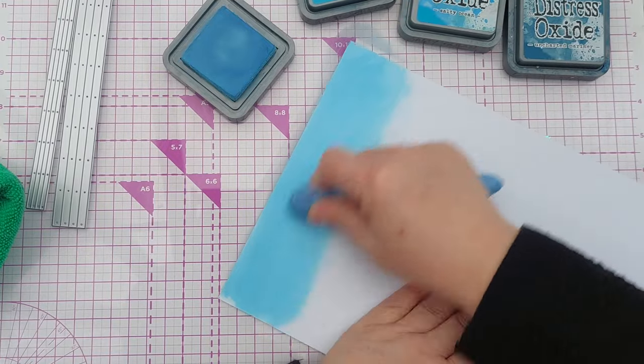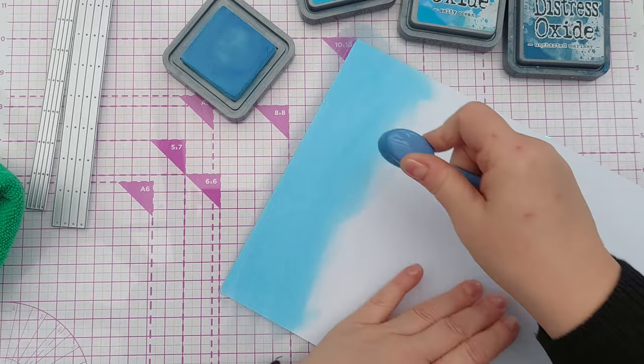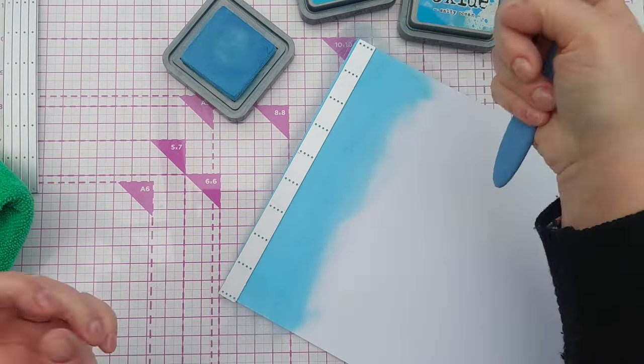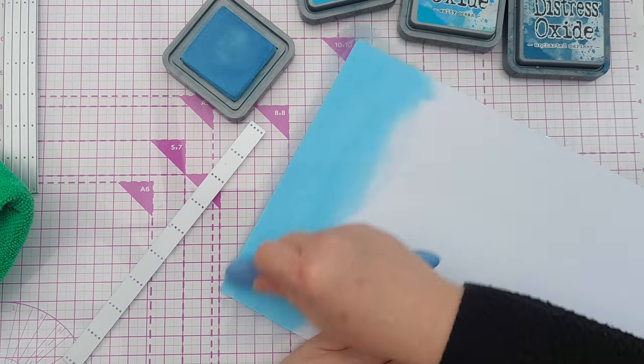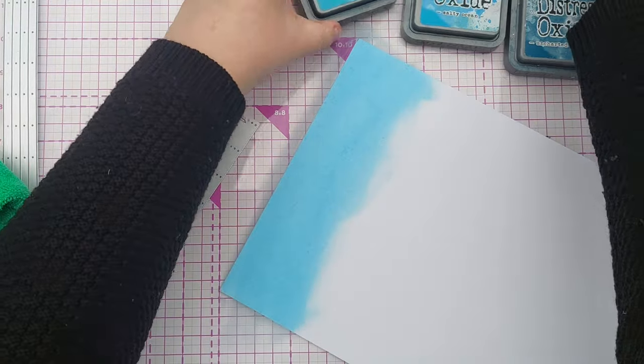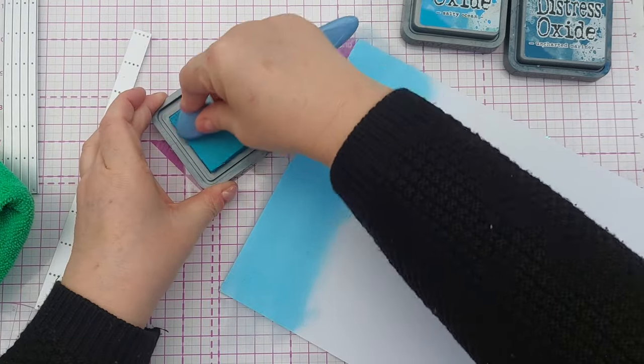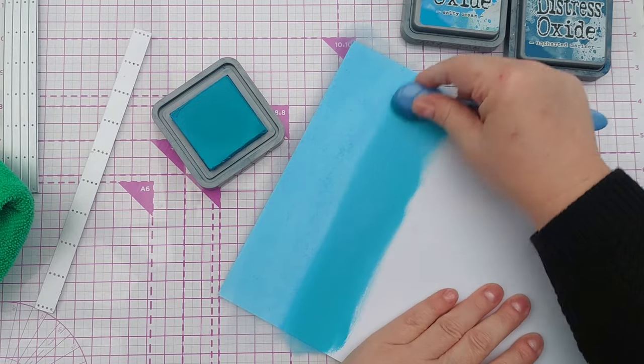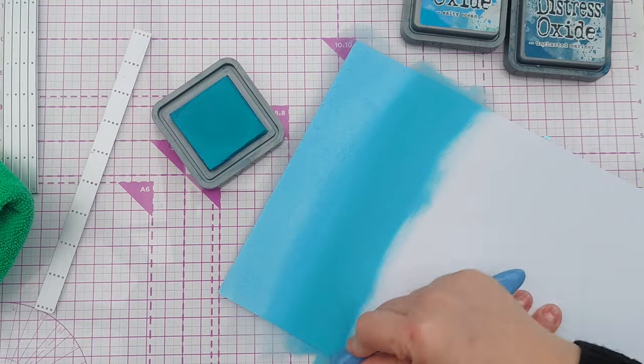I've got smooth white cardstock here and I'm going the full width of this A4 paper because my strip dies cut from that length. I'll start with the Tumbled Glass, then Broken China. I'm working from light to dark so I don't have to change my blending brush and won't contaminate my ink pads.